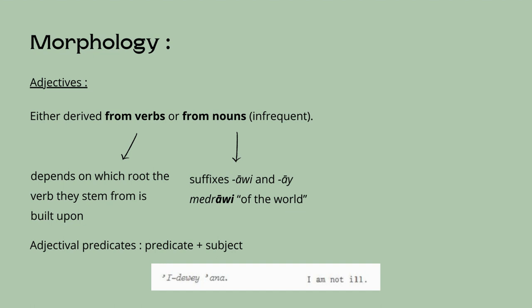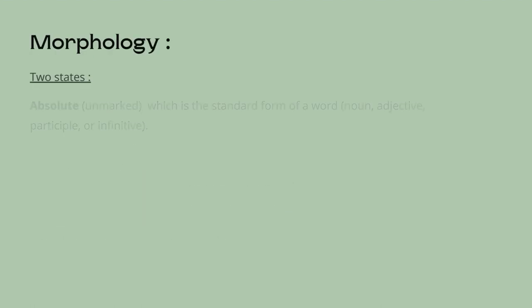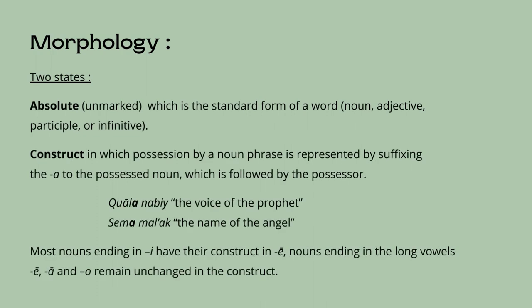Adjectives derived from verbs follow different constructions depending on which root form the term is built upon. In the case of adjectival predicates, the order is predicate plus subject, and the adjectival predicate is negated with an e. There are at least two states in Ge'ez: absolute, which is the standard form of a word — noun, adjective, participle, or infinitive — in contrast to a modified form called the construct state.